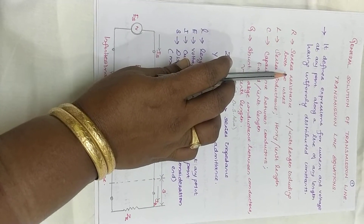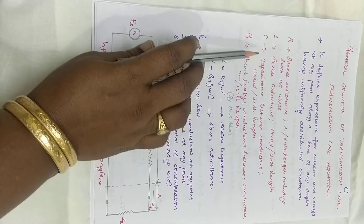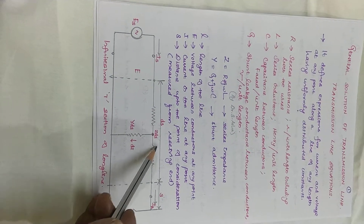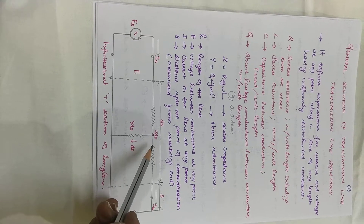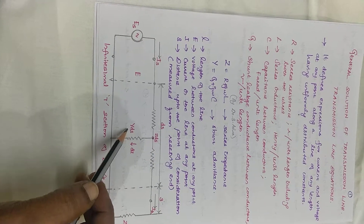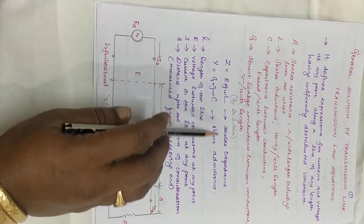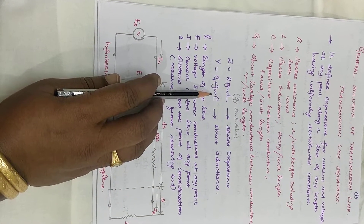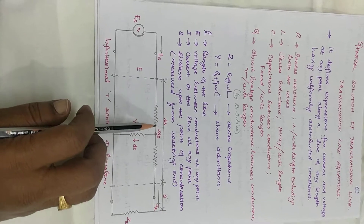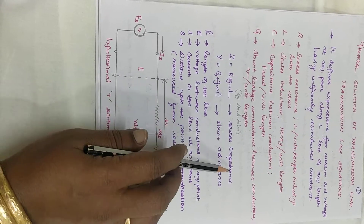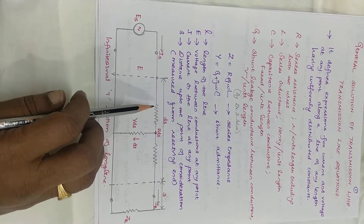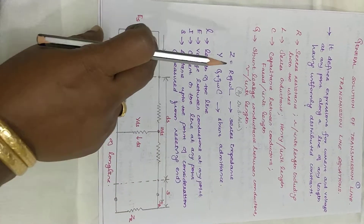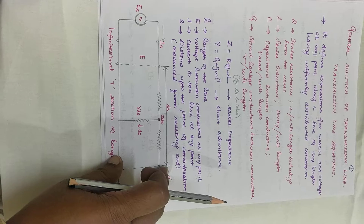R is the series resistance, L the series inductance, C the capacitance between the conductors, and G the shunt conductance. Y defines the shunt admittance, which is a combination of shunt conductance and capacitance, whereas Z represents the series impedance, which is a combination of resistor and inductor. A general T network is shown here. L is the overall length of the transmission line.